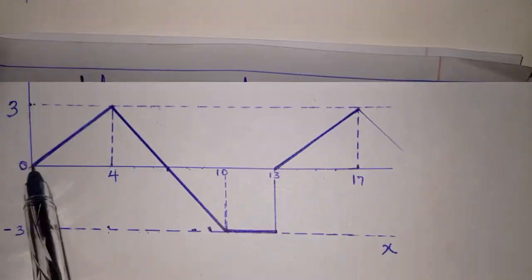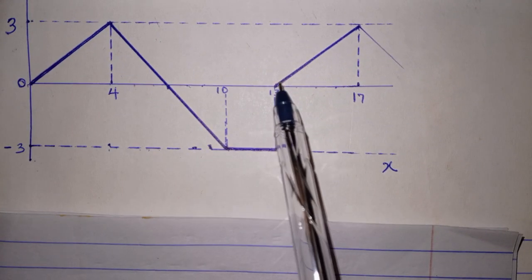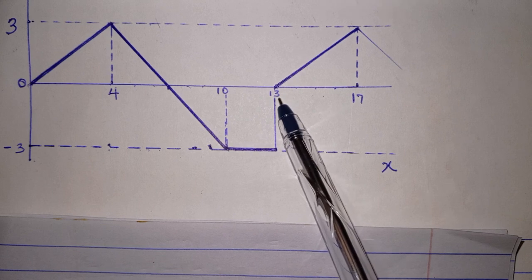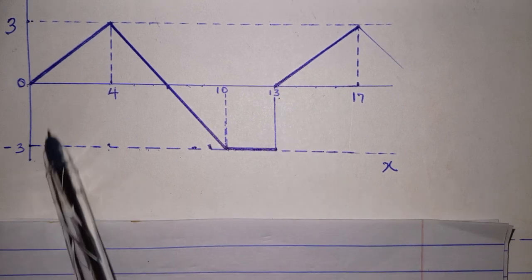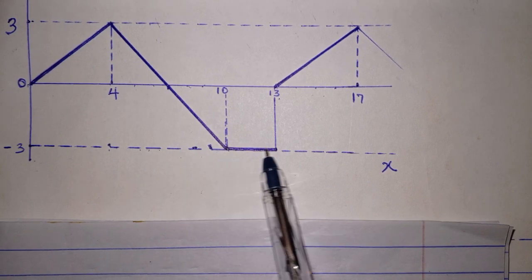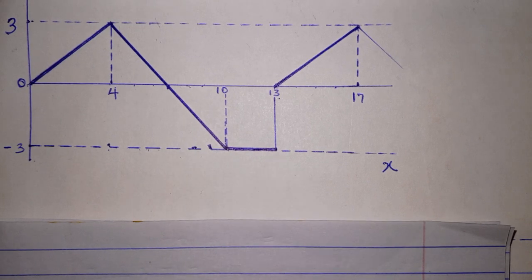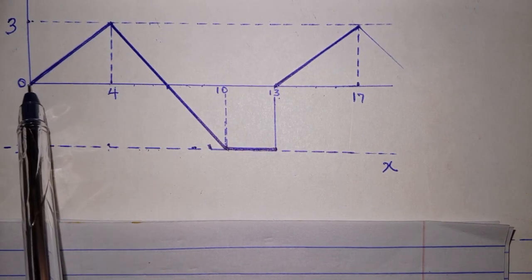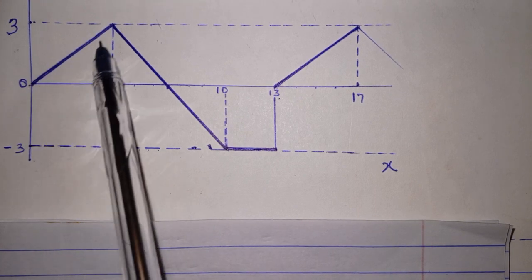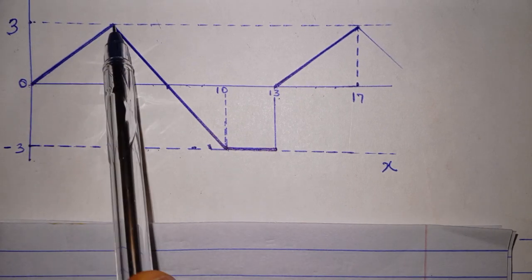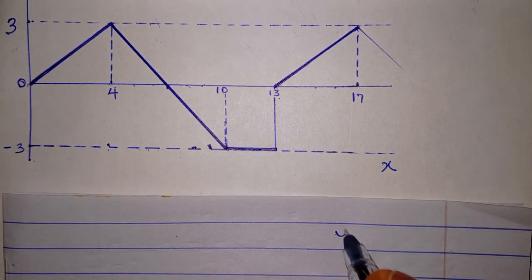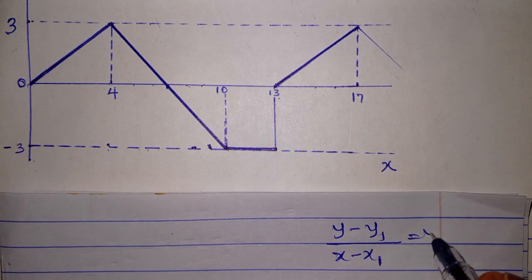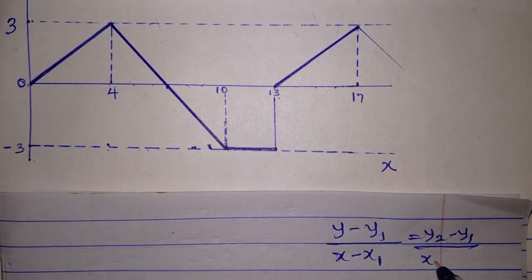Let's proceed to the third one. The function started from here and we can see it starting again from this point. So the period is 13. What we'll do is describe this line, this line, and this line — the thick lines. Between x equal to 0 and x equal to 4, let us describe this first line. We have to look for the equation of this line using the two-point formula: y minus y1 over x minus x1 equals y2 minus y1 over x2 minus x1.